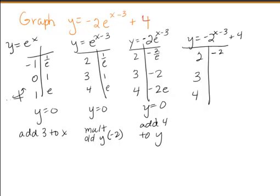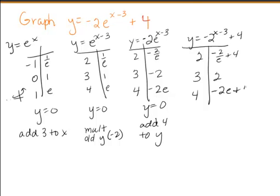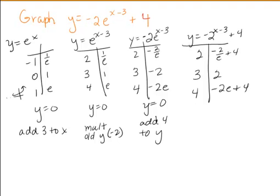so it's going to be negative 2 over e plus 4, negative 2 plus 4, and negative 2e plus 4. So we're adding 4 to the asymptote, so we'll get y equals 4, and we're ready to graph.